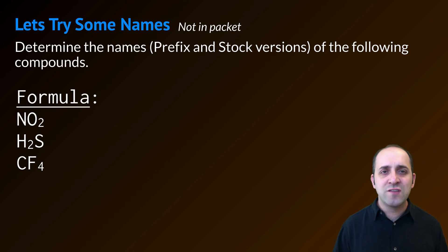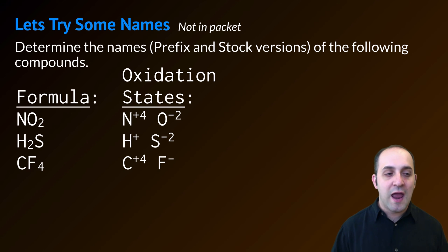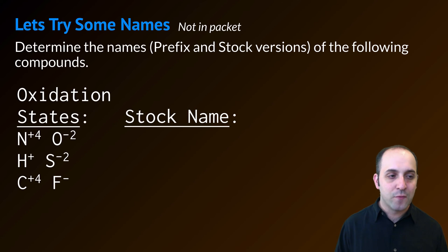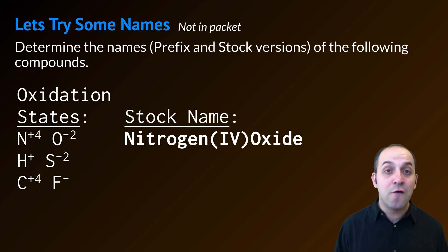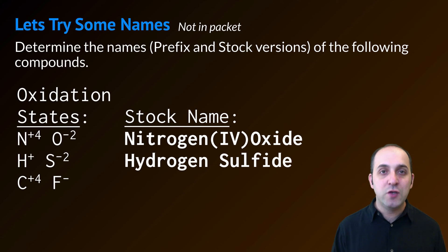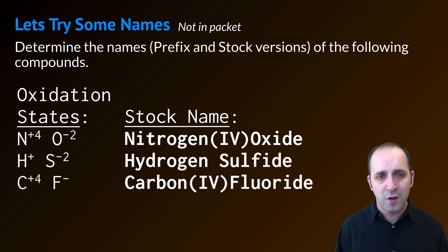Now let's look at the stock versions. To figure out stock names I need the oxidation states: in NO2, nitrogen is +4 and oxygen is -2; in H2S, hydrogen is +1 and sulfur is -2; and in CF4, carbon is +4 and fluorine is -1. The stock name for NO2 is nitrogen(IV) oxide. For H2S we have hydrogen sulfide — we don't need the stock system because hydrogen is always +1. And CF4 is carbon(IV) fluoride.